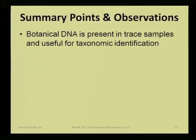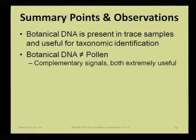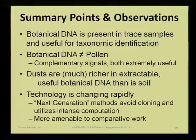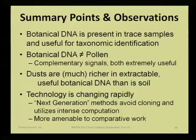To summarize: botanical DNA is present in trace samples and is very useful for taxonomic identification. It's not equal to pollen — they're complementary signals, both extremely useful. Some folks approach it as if they don't have to do pollen and can just look for plant DNA — that's not correct, because pollen can be years old and have no DNA in it whatsoever, yet you still see the structure. Dusts are much richer in extractable, useful botanical DNA than soil — soil is very difficult to get plant DNA out of, whereas dusts are fantastic. Typically you can expect that many species from a dust sample — 36 different taxa is not an extreme result. And the technology is changing very rapidly — the cloning techniques I described are essentially obsolete now, replaced by next-generation DNA typing where you extract, get sequences of everything all at once with heavy computational processing, and get tens of thousands of sequences out.